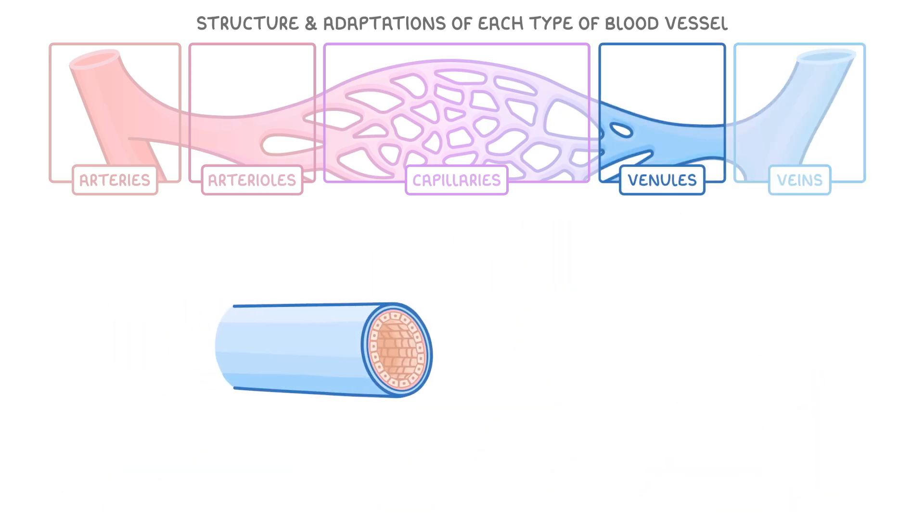So now let's quickly finish up with venules. These are really similar to veins except they're just a bit smaller. They have very thin walls, very little smooth muscle in these walls, and they also have valves to help direct blood flow into the veins so that it can then be carried back to the heart afterwards.